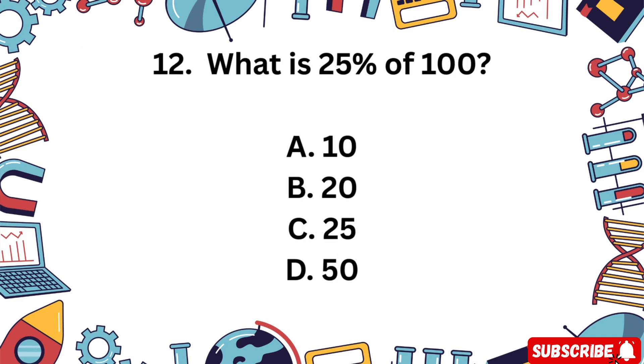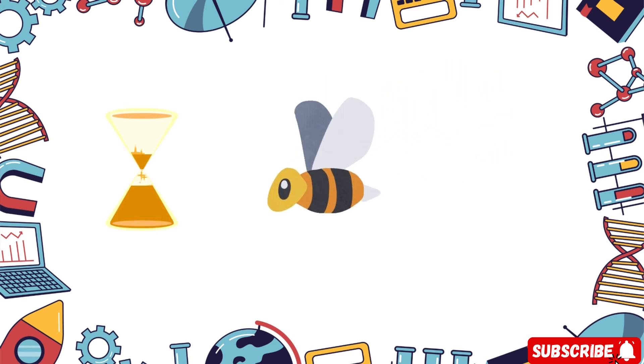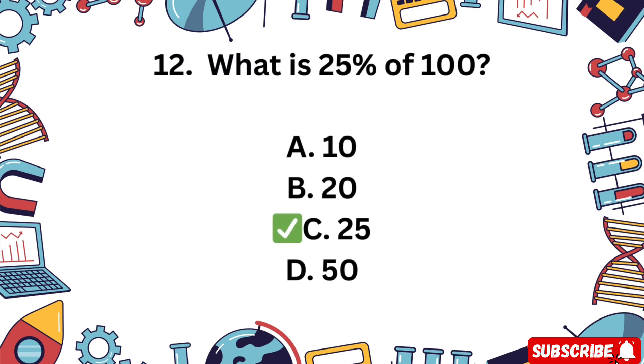Question 12. What is 25% of 100? A 10, B 20, C 25, D 50. Percent means out of 100. 5 seconds to think. The correct answer is C 25, because 25% of 100 is 25.